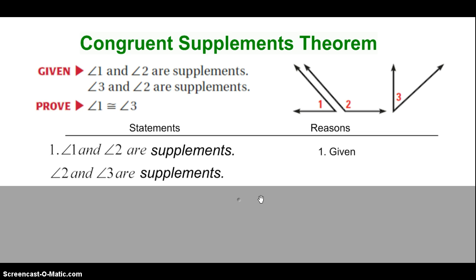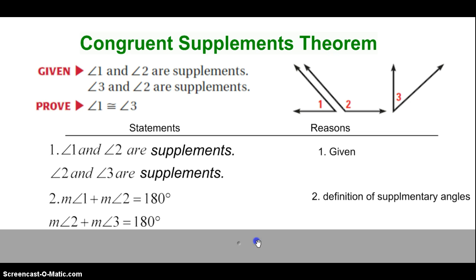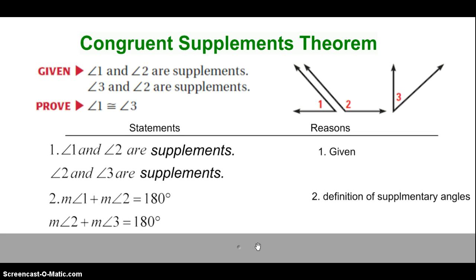Let's begin the proof. We are given that the angles are supplements. What does it mean to be supplements? It means that their measures would add up to 180 degrees. So statement 2: the measure of angle 1 plus the measure of angle 2 equals 180, and the measure of angle 2 plus the measure of angle 3 equals 180 degrees. We know this because of the definition of supplementary angles.